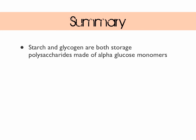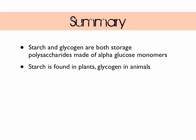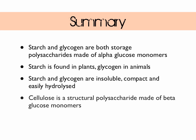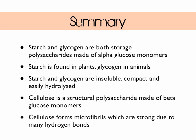To summarise: starch and glycogen are both storage polysaccharides made of alpha-glucose monomers. Starch is found in plants; glycogen is found in animals. Both are insoluble, compact and easily hydrolysed. Cellulose is a structural polysaccharide made of beta-glucose monomers, forming microfibrils which are strong due to many hydrogen bonds. This is quite a short topic - thanks for watching.